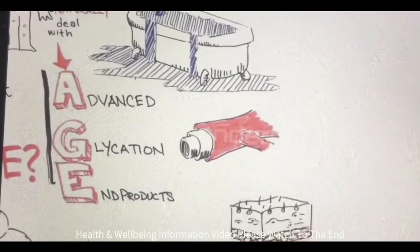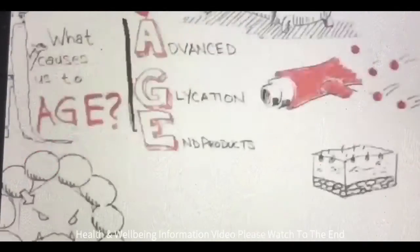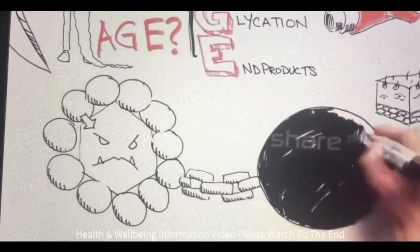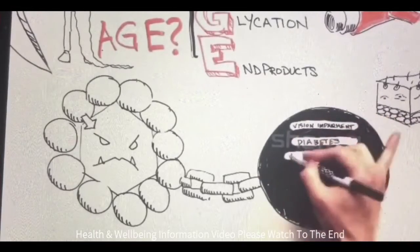and rigid. They can also cause wrinkles, damaged tissue, or lead to even more serious issues. In fact, AGEs have been shown to play a key role in the development of several chronic diseases like vision impairment, diabetes, heart disease,